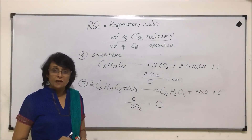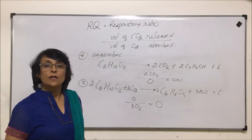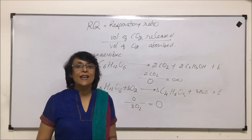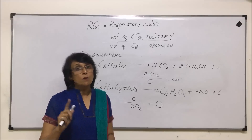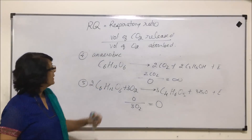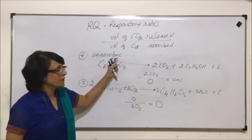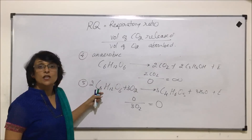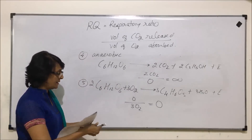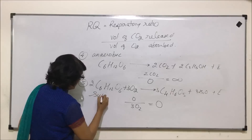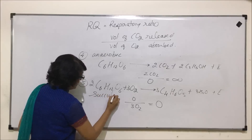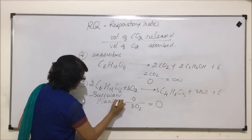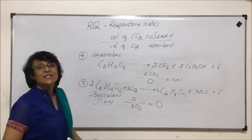So there are 5 things to remember: Carbohydrate — RQ is 1. Fats and proteins — RQ is less than 1. Organic acids — RQ is more than 1. In case of anaerobic respiration — RQ is infinite. In case of succulent plants — RQ is 0.